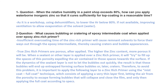To avoid this problem, it is important to apply the following layers to a zinc rich primer using the mist coat or full coat technique. This consists of applying a very thin layer first, then letting the air from the porosity escape by forming bubbles that collapse and close the film. Only then do you apply the full coat according to specs. First apply this mist or thin layer to allow bubbles and cratering to escape, and after that apply the full coat as specified.